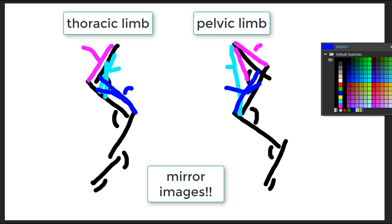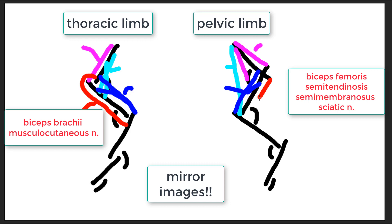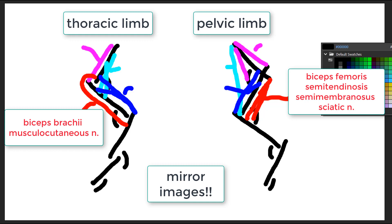Moving on, the biceps brachii runs from the distal scapula all the way to the long end of the lever at the radius and ulna. Its contraction causes flexion of the elbow joint, and it is innervated by the musculocutaneous nerve. Its analog in the pelvic limb is the biceps femoris, which originates from the ischiatic tuberosity and spans the flexor surface of the stifle joint. The biceps femoris, along with the semimembranosus and semitendinosus, are all innervated by the sciatic nerve.